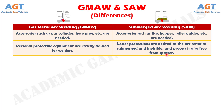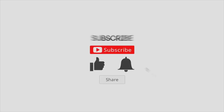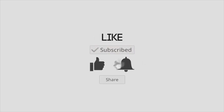Difference number 15: Gas metal arc welding can be applied in various welding positions, including high inclination, whereas submerged arc welding is preferred for flat horizontal position only.